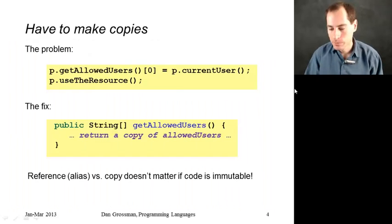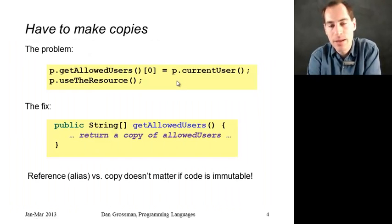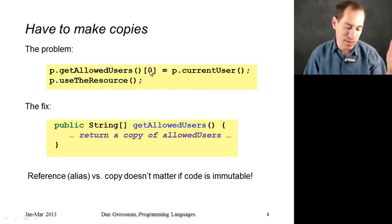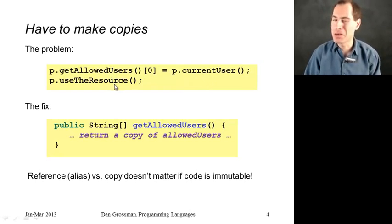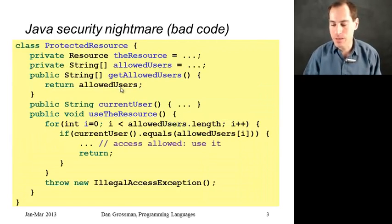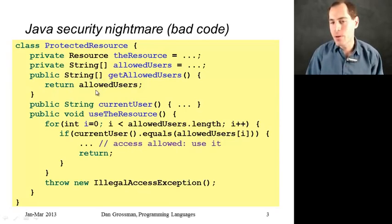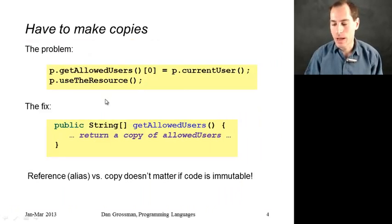Ready? Here we go. The get allowed users method returns an alias to the array. All a malicious user has to do is call get allowed users to get an alias to the array, and then update one of the elements of the array, say position zero, to be the current user. And if you then call use the resource, that name will be in the array. Clicking back to the previous slide, the error is in fact not in use the resource - that's doing exactly the right thing. It's in get allowed users for leaking an alias to the allowed users array. It assumes that clients were only going to read this result, and in a language that didn't allow you to mutate array elements, that would be a fine assumption. But Java is not such a language, so clients can do something like this and be able to access the resource whether they were supposed to or not.